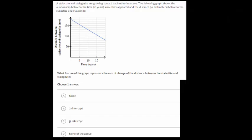And now moving on to another one. So with this problem, we have a stalactite and a stalagmite are growing toward each other in a cave. The following graph shows the relationship between the time in years since they appeared and the distance in millimeters between the stalactite and stalagmite. So let's try and analyze this graph. The y axis is the distance between them, and the x axis is the time in years.